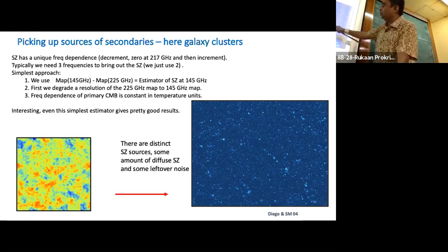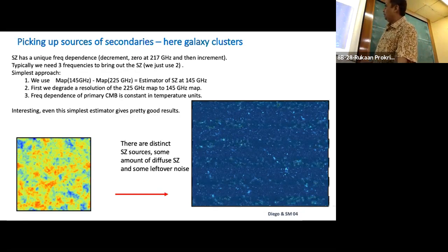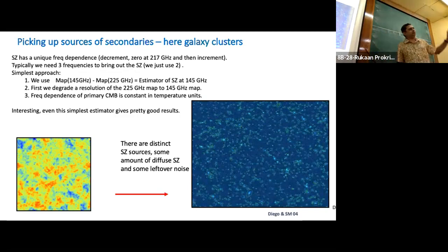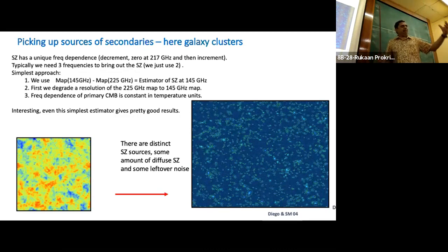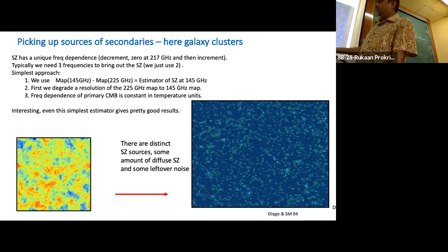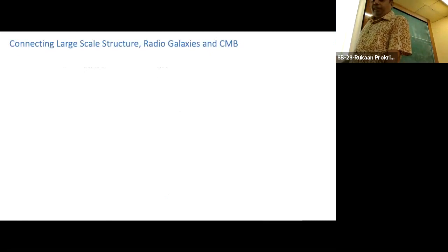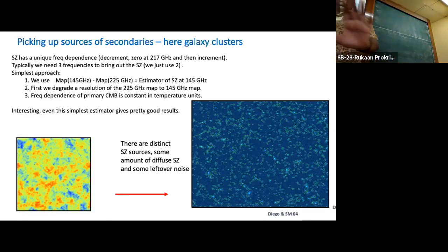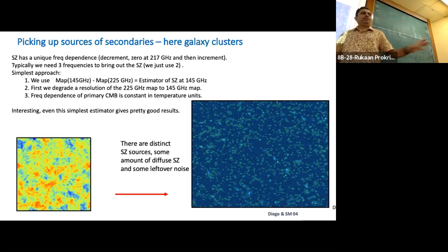Very simply — no fancy thing, just subtraction of maps. If you look at the sky at two different frequencies, carefully choose one where there are no secondaries, subtract it, and scale whatever you think is primary back to that frequency — suddenly you get a map where the structures pop up. Of course, things are more complicated when there are foregrounds, which will add more noise, but the basic idea is simple map subtraction.